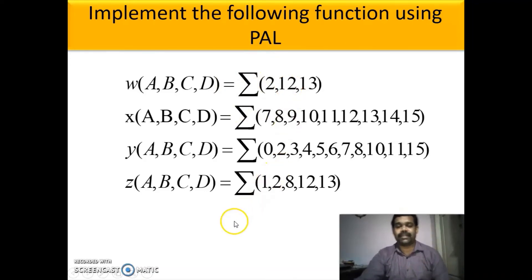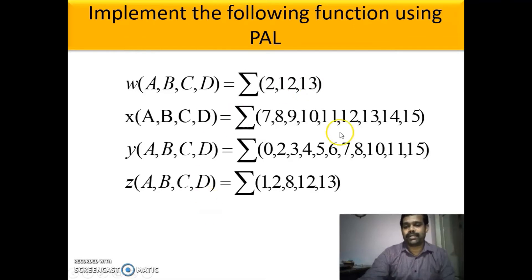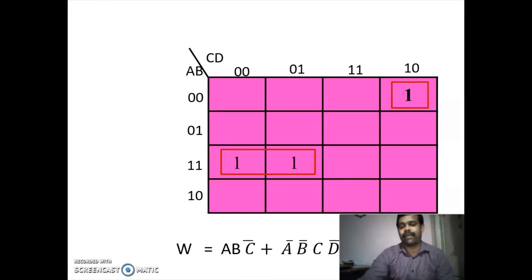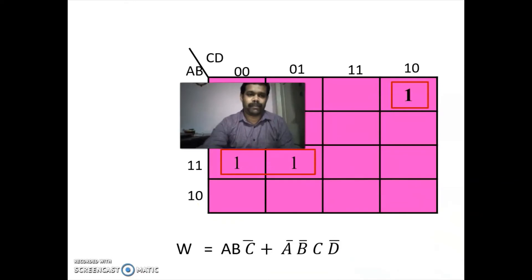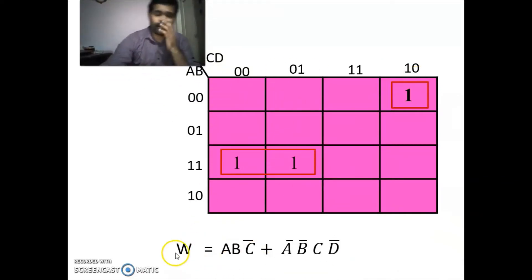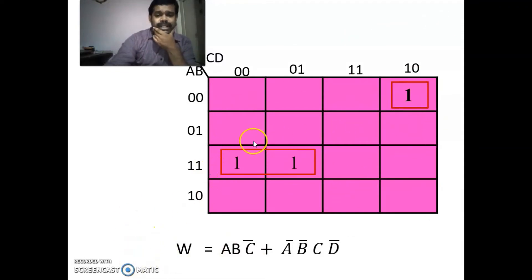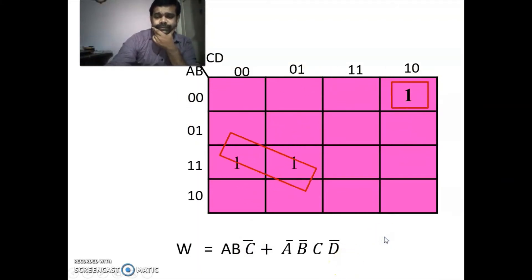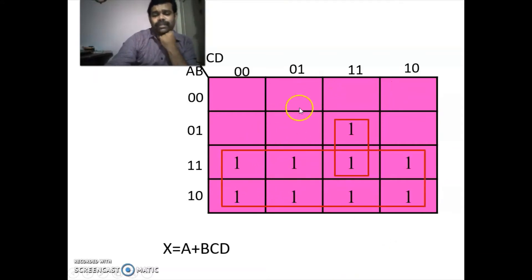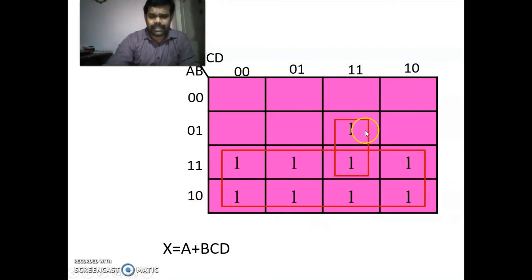The first step is to minimize the expressions using K-map. This is the K-map for W. We plot the ones and write the expression. The expression for the group is ABC-bar, and the expression for the single one is A-bar B-bar C D-bar. The expression for X is obtained by plotting the given minterms and grouping — we have one pair and one octet. The octet gives A, and the pair gives BCD.